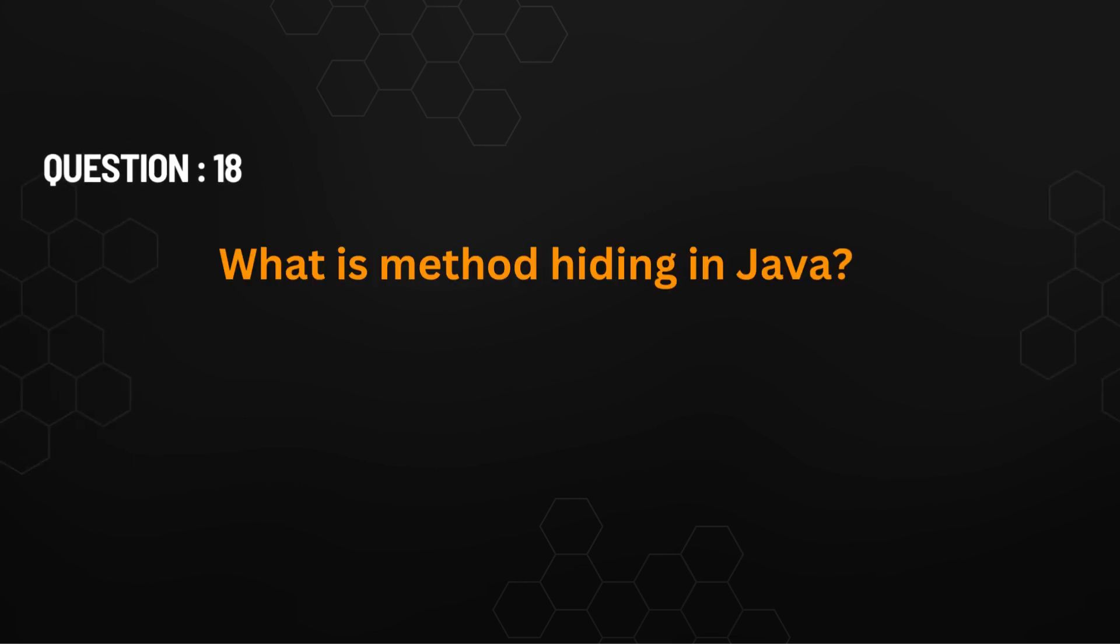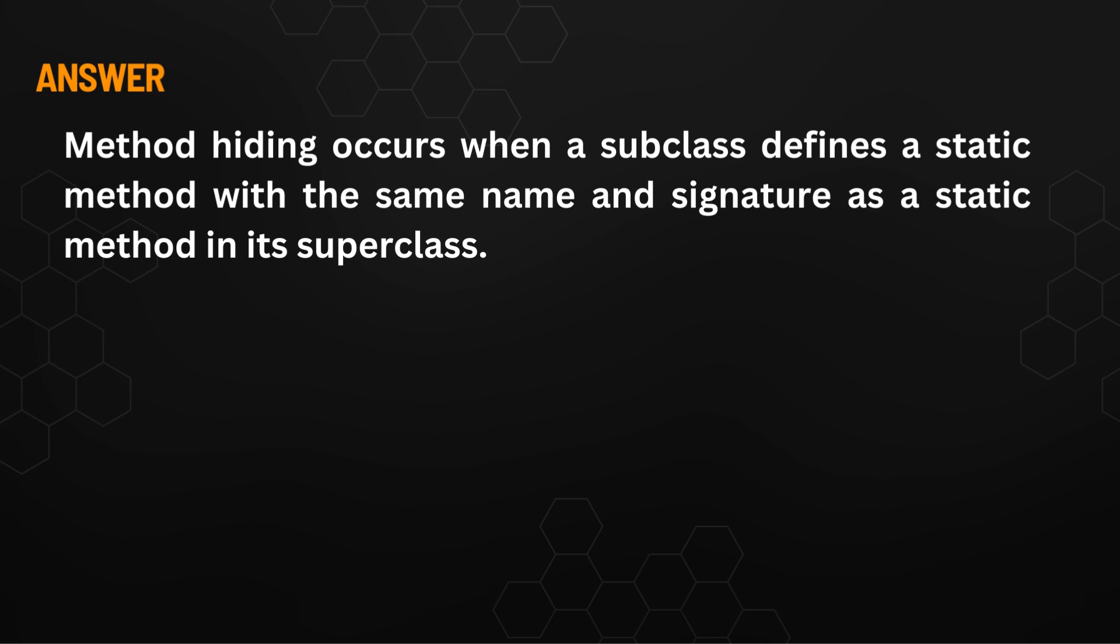What is method hiding in Java? Method hiding occurs when a subclass defines a static method with the same name and signature as a static method in its superclass.